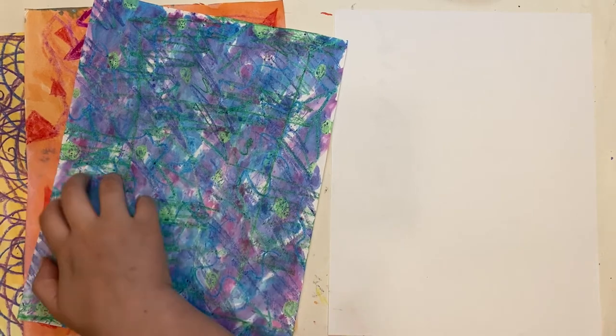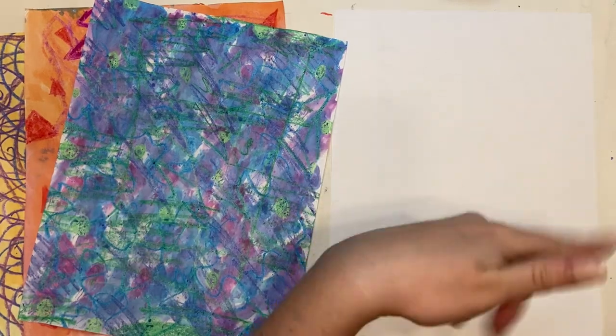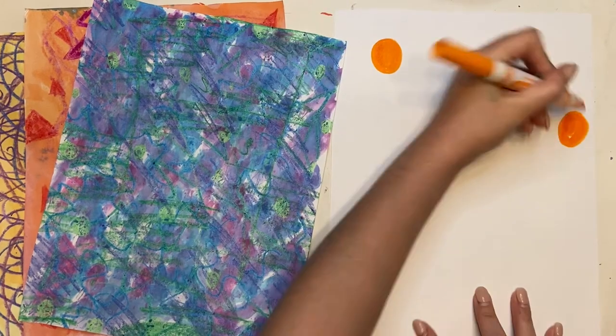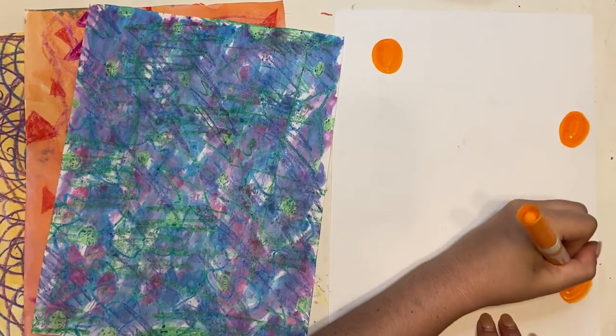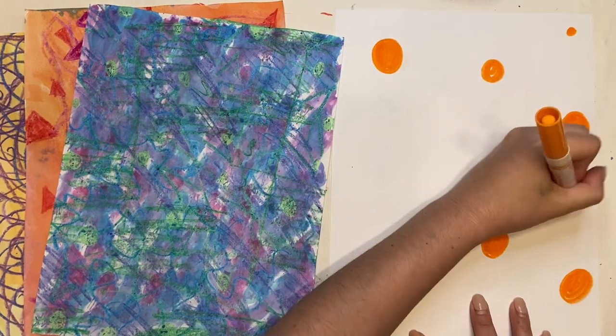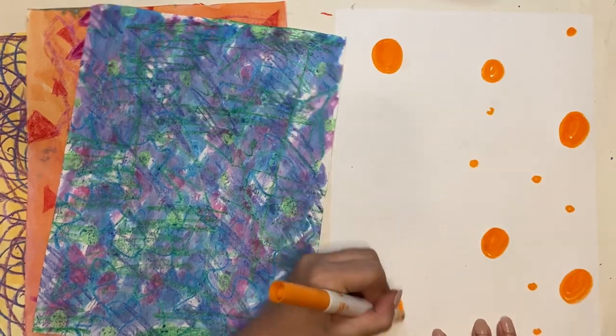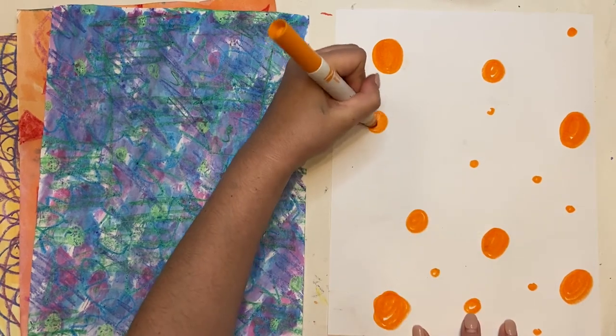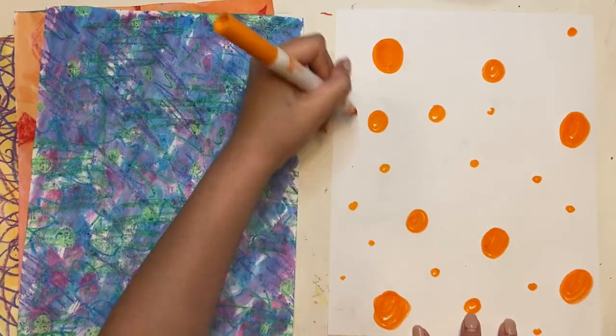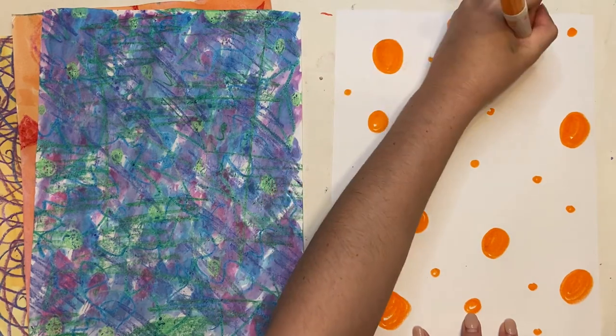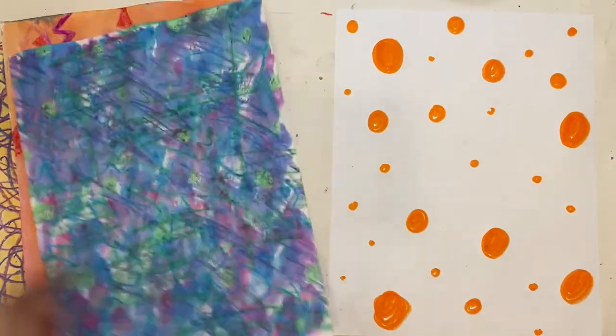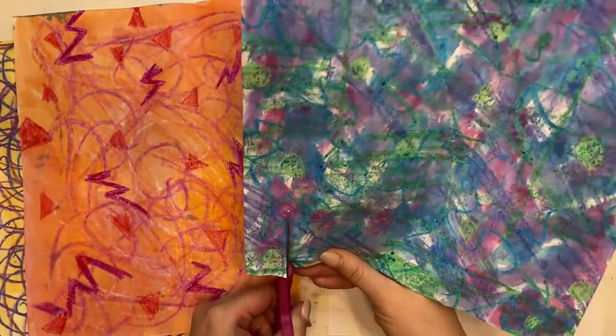With your paper and markers, crayons, whatever else you have, you're gonna begin adding layers to your background white paper. So I'm starting with dots, but you could do anything you want to your background. You could do triangles or other shapes, you could do different lines, you could even do random blurbs of color. That would all work.